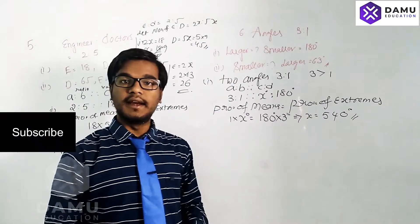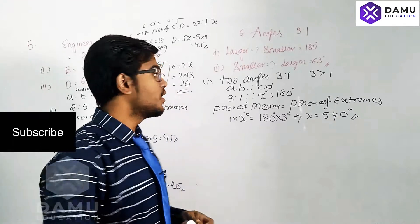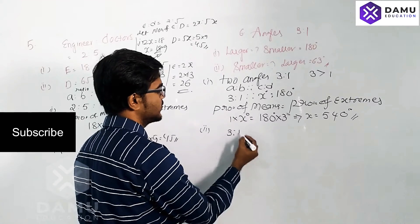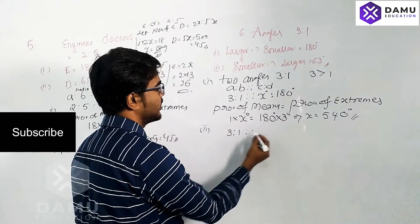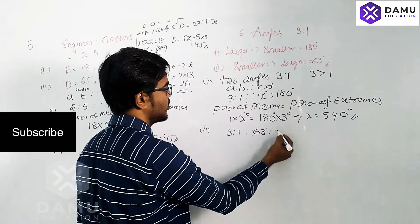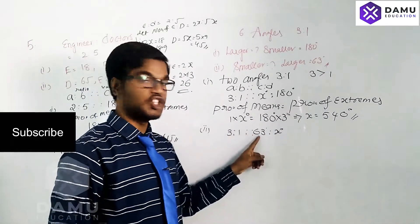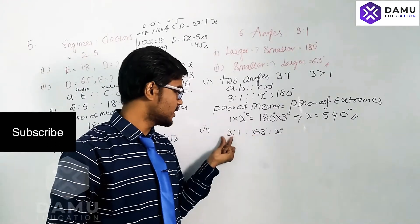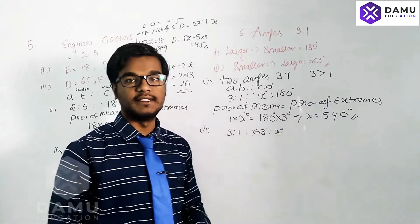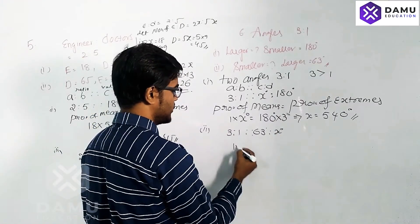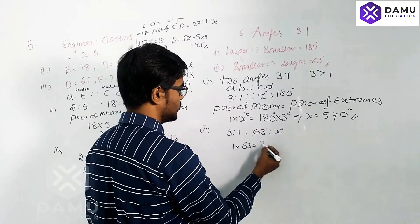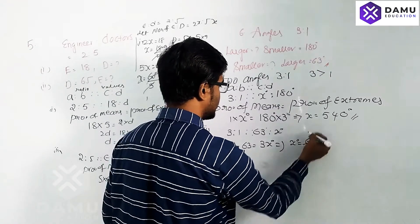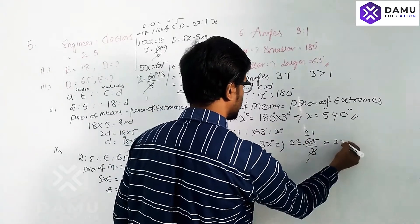The larger angle is 540 degrees. For the second part, we need to find the smaller angle. Taking 3 is to 1 as 63 is to x degrees, where 63 is the larger angle given. So 1 into 63 equals 3 into x, meaning x equals 63 divided by 3, which is 21 degrees. The smaller angle is 21 degrees.